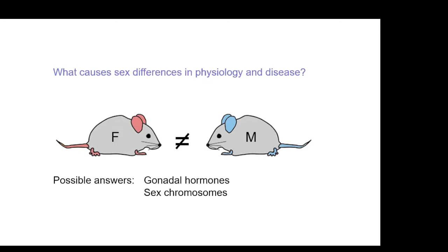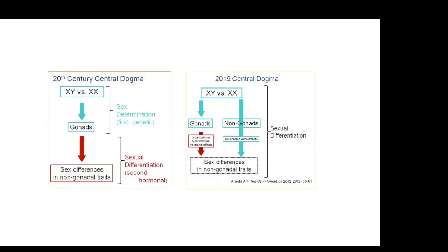All sex differences start ontogenetically in mammals from the sex chromosomes, because in the zygote — the fertilized egg cell — the only factors that are different between males and females are the sex chromosomes. At least that's what we believe now. We don't know anything else that's different in the one-cell developing organism, so it all has to come from the sex chromosomes.